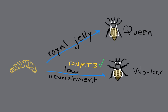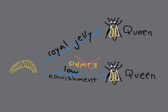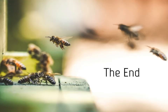DNMT3 is a de novo methyltransferase. Usually, female larvae that are not fed royal jelly become workers. However, when DNMT3 is silenced, they will develop into queens with fully functioning ovaries. This example demonstrates how epigenetic changes can have a major impact on phenotype. Thank you for watching!